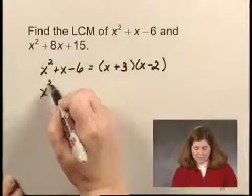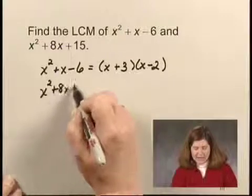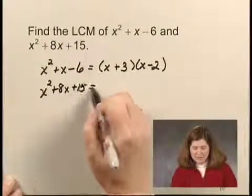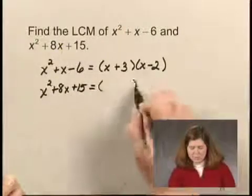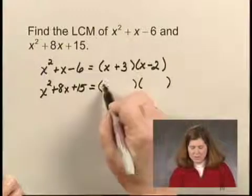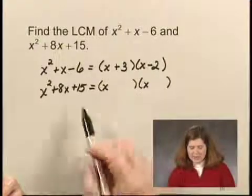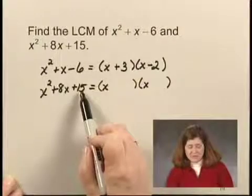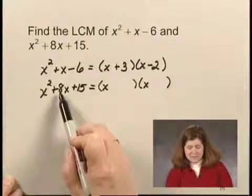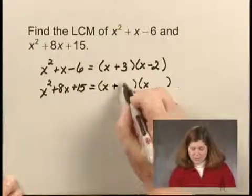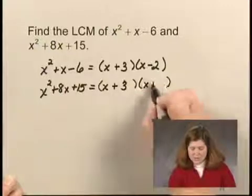Now we factor x squared plus 8x plus 15. This factors into two binomials. The first term in each binomial is x. Since the product of 3 and 5 is 15 and the sum of 3 and 5 is 8, it factors into x plus 3, x plus 5.